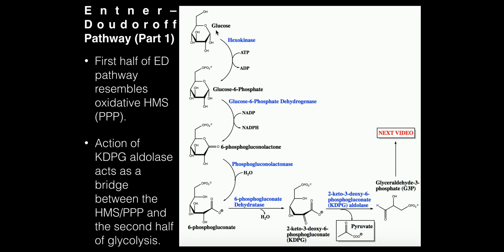We start with glucose as our primary sugar to metabolize. Hexokinase, which is common in glycolysis, is going to phosphorylate the sixth position on glucose using ATP, and we generate glucose-6-phosphate. It's pretty predictable, and we're now going to start the oxidative pentose phosphate pathway.